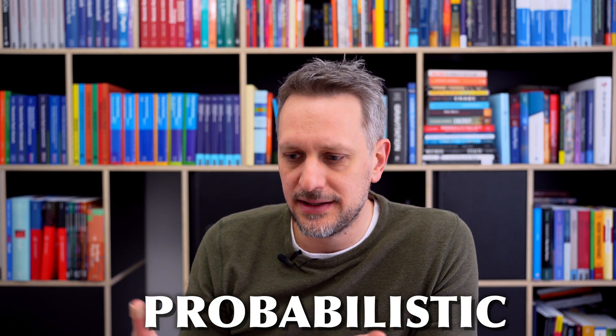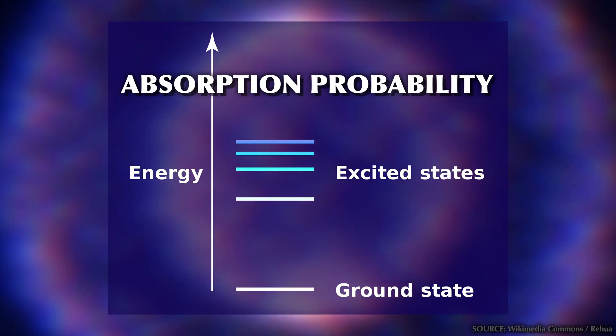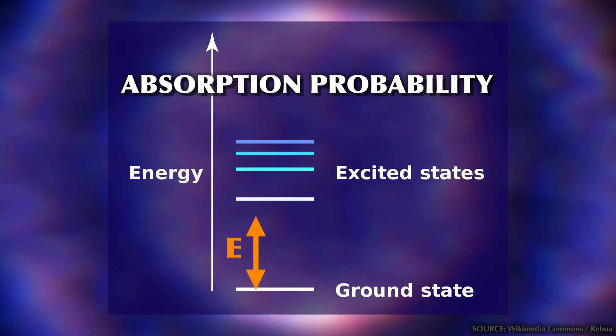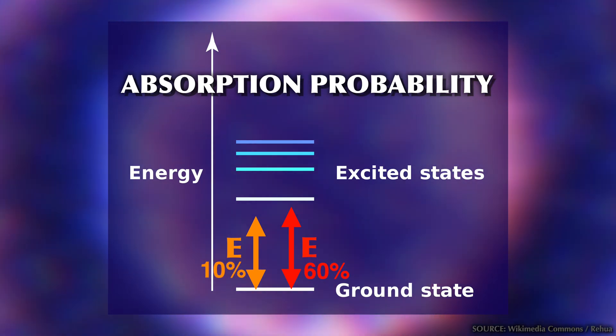Let's be a bit more precise here. What does exactly right mean? Well, quantum mechanics is a probabilistic theory, meaning that every process has a given probability to happen. And the closer a photon's energy is to the required energy of the atom, the more likely the absorption is.